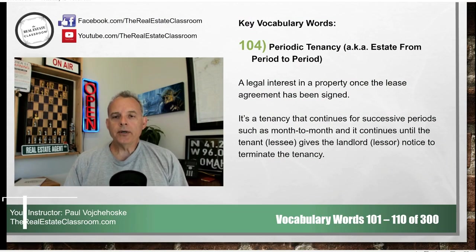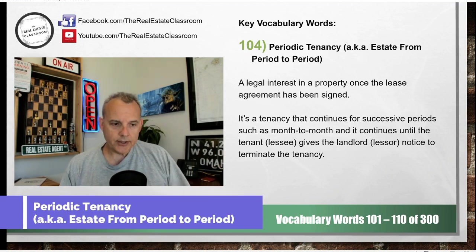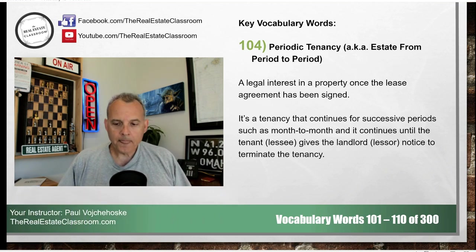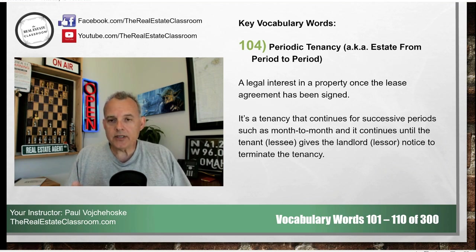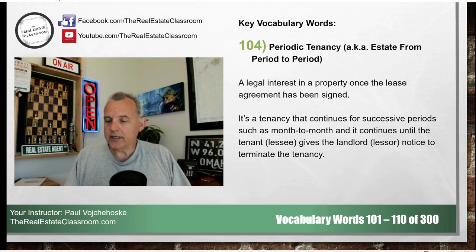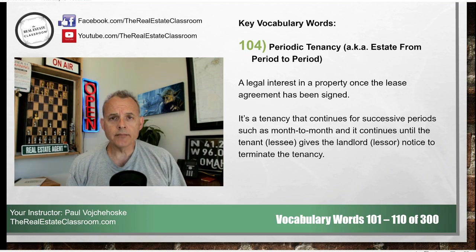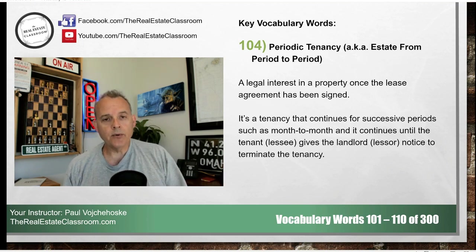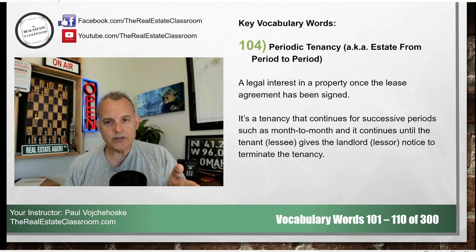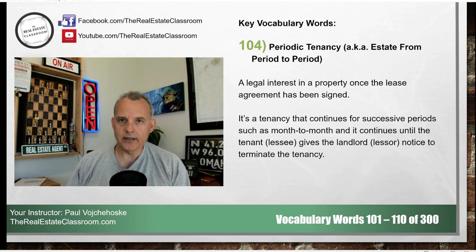Number 104: periodic tenancy, commonly referred to as estate from period to period. The best example is a month-to-month lease agreement. Within the lease agreement, the landlord and the tenant agree this is month-to-month, meaning tenancy continues automatically each month until the tenant or the landlord gives notice to the other that tenancy is going to end. A tenant can live in an apartment on a month-to-month agreement for years, with a 30-day notice typically given when either party wants to end it.